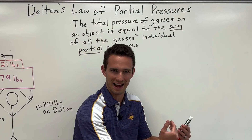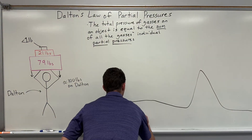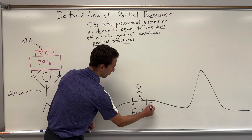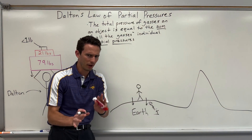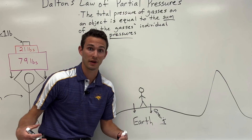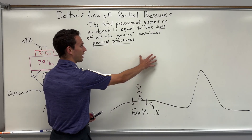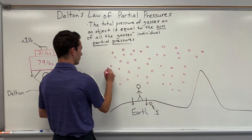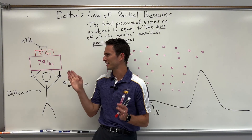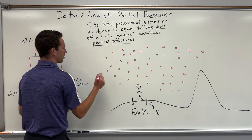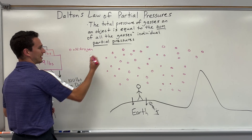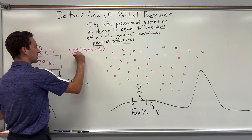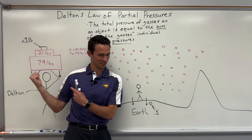So how does this get represented in terms of gases? Here's Dalton again on Earth, obviously being pulled down to the Earth by gravity. Because if we didn't have gravity, we'd just be floating around in the atmosphere. But we know that above us is atmosphere, and atmosphere is made of gases. So above Dalton, we've got a bunch of different gases. Here I've drawn a bunch of pink circles — these are representing the gas nitrogen, with the chemical formula N₂. Nitrogen makes up 79% of our atmosphere, obviously corresponding to the 79-pound weight.